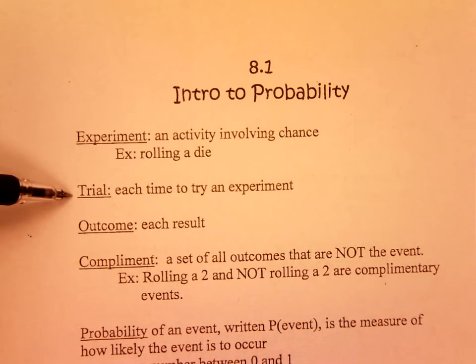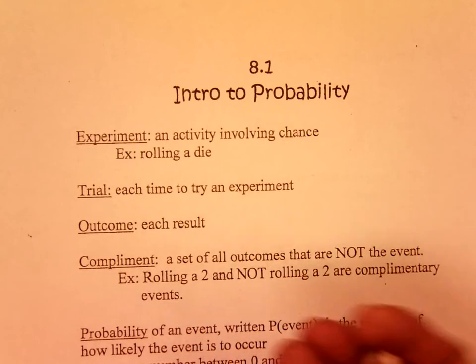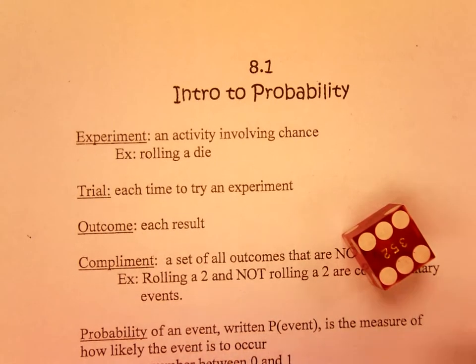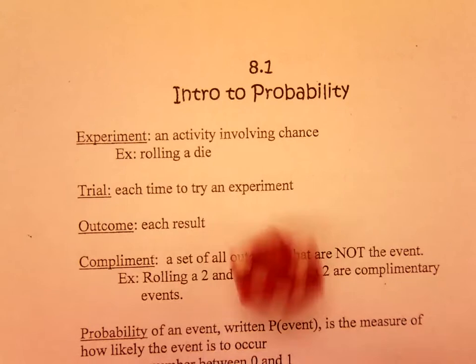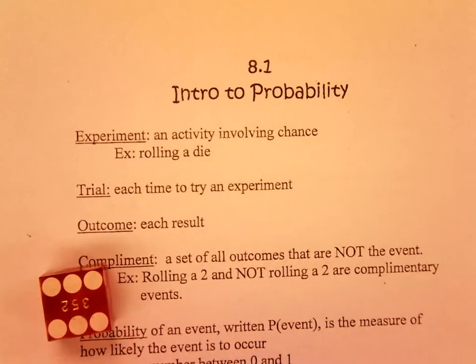A trial is each time you try an experiment. So if I roll the die, that is a trial — the first trial. Then I roll it again, that's the second trial. Every time I roll the die, it is a trial.